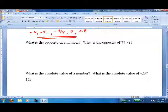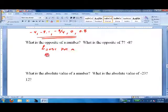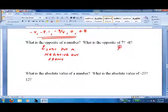What's the opposite of a number? Well, just put a negative out front. If there's already a negative, then you change it to a positive. So, the opposite of 7 is negative 7. The opposite of negative 8 is positive 8.